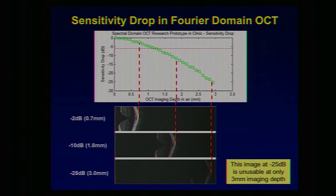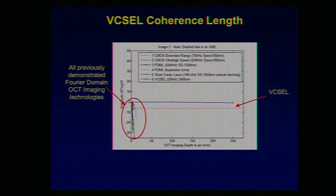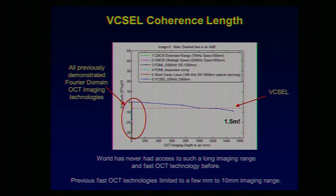An inherent instrument-based challenge in OCT is sensitivity roll-off with depth. At a shallow depth you get a nice bright image, but going deeper you lose sensitivity — down 10 dB at about 2 millimeters, and down 25 dB at 3 millimeters, which is essentially unusable. Spectral domain — the widely commercialized technology used in clinics daily — rolls off the fastest. All swept source technologies do better. But the VIXEL is basically flat all the way out to 12 millimeters, and even at 1.5 meters we're only down 10 dB. This is a very different technology that dwarfs all others for fast OCT imaging range.